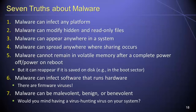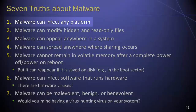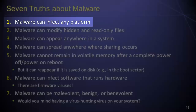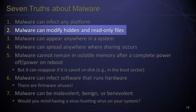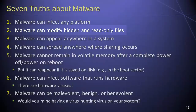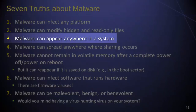As food for thought, I would like to discuss seven truths about malware. First, malware can infect any platform — the persistent belief that devices running macOS or iOS are immune to malware attacks is absolutely false; all computing systems can be affected. Second, malware programs can modify hidden and read-only files, as they often run with elevated privileges and can easily change whether a file is hidden or read-only. Third, malware can appear anywhere in a system, as many developers of malicious programs are extremely intelligent and there are no dark corners of a computer system immune to malware.